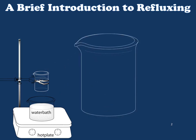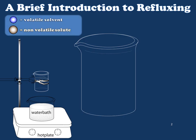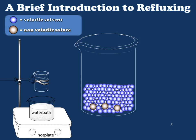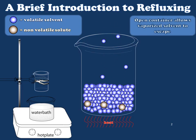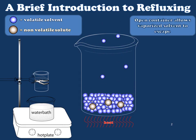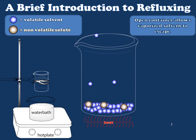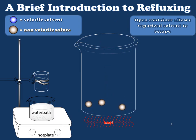Within our beaker, we're going to place two different kinds of molecules: those of volatile solvent, shown in blue, and those of a non-volatile solute, shown in brown. As we apply heat to this mixture, we expect the volatile solvent to boil. As you can see, the solvent vapor is escaping and not returning to the flask. This means that over time, we expect all of our solvent to become vapor and ultimately escape, leaving behind simply a residue of the non-volatile solute.